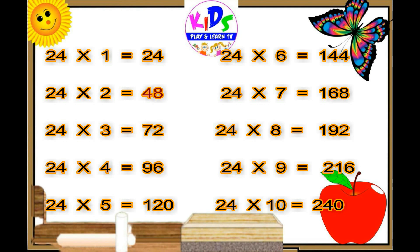24 sevens are 168, 24 eights are 192, 24 nines are 216, 24 tens are 240.